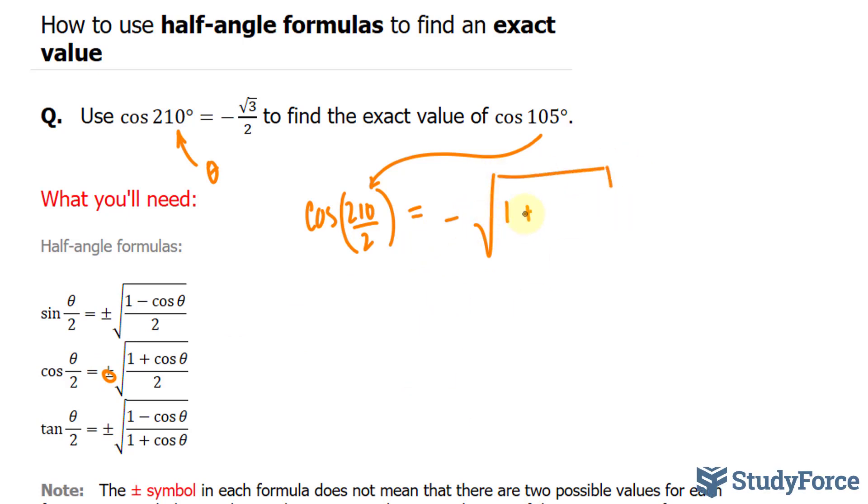We have 1 plus cosine theta. Remember cosine theta is negative the square root of 3 over 2. So I'll write down negative square root of 3 over 2, over 2. So this is actually the ratio for cosine 105.